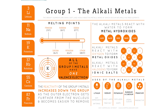Group one, the alkali metals, have melting points that increase as we go up the column from bottom to top. They have one valence electron, and their reactivity increases as we go down the column. They do form metal oxides. Alkali metals include lithium, used for batteries and antidepressants; sodium, familiar as sodium chloride or table salt; potassium, used in fertilizers and soaps; rubidium and cesium, used for the atomic clock; and francium, which is radioactive.